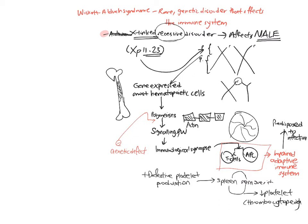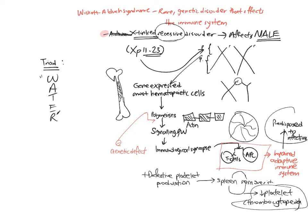So in this condition there is a classic triad, and there's a mnemonic for it: WATER. The W stands for Wiskott, the A stands for Aldrich, the T stands for thrombocytopenia as mentioned before, the E stands for eczema which can be severe, and R stands for recurrent infections.